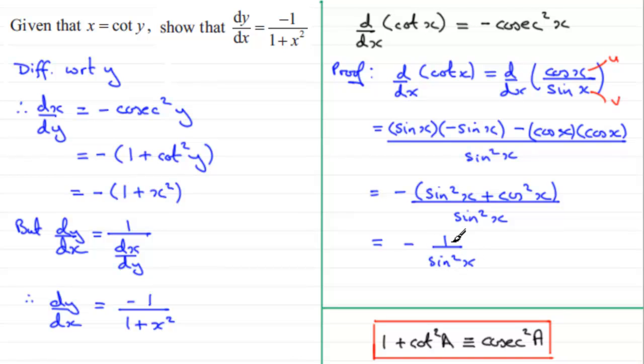And, 1 over sine squared x is cosec squared x. So, coupled with this minus, you end up with this equaling minus cosec squared x. So, if you weren't familiar with this result, then you can always work it out from first principles.